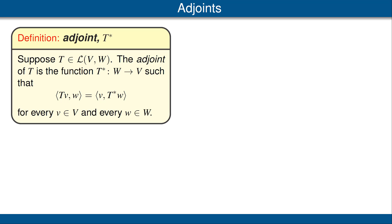We have a theorem that we discussed in a previous video, that every linear functional on V is of the form V inner product something. Thus, the left-hand side, which is T of V inner product W, must equal V inner product something for every vector in V. We call that something T star of W. In other words, T star of W is the unique vector in V that makes the displayed equation true for every vector V in V.